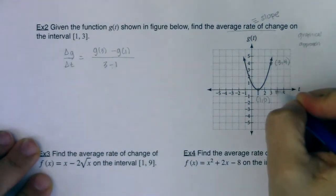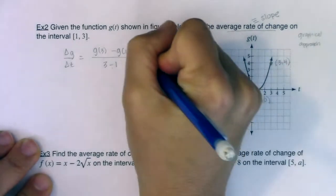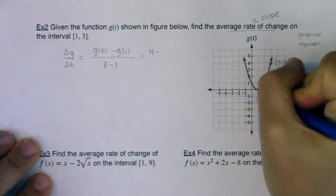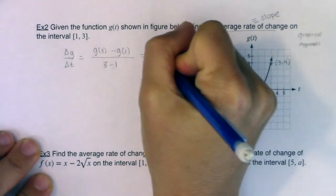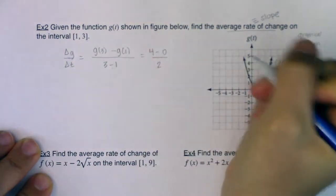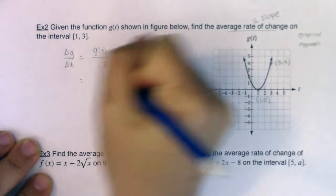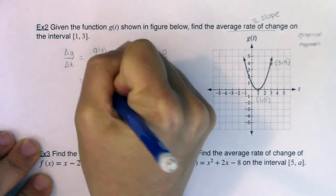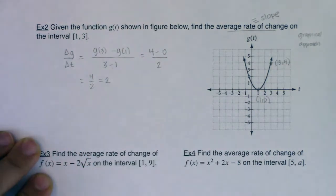All right. So g of 3, if I plug 3 in, I get 4 back out. g of 1, if I plug 1 in, I get 0 back out. My denominator is 2. So I am getting 4 over 2, or just 2. And that's my answer.